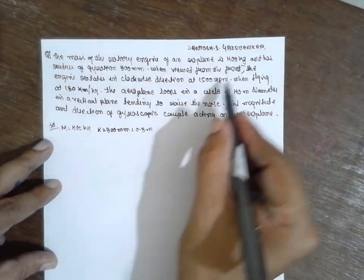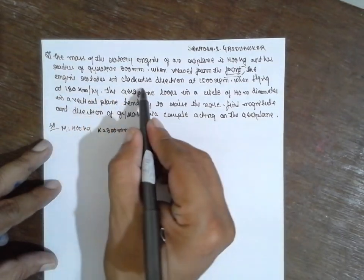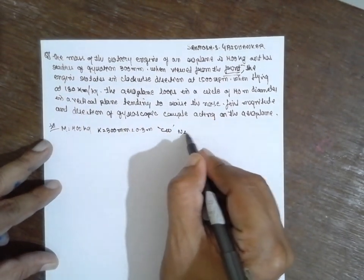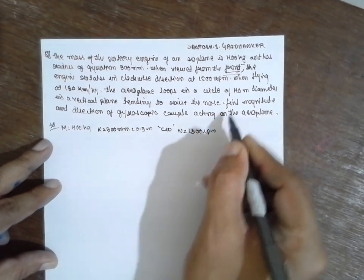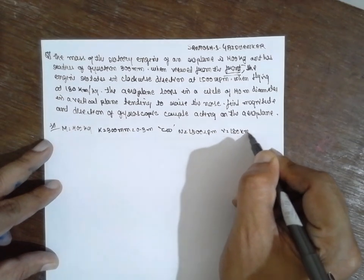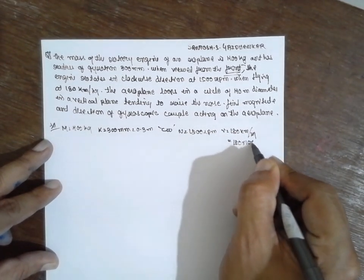We are viewing from the front here, it is very important, of engine rotating in clockwise direction. Clockwise direction, n is equal to 1500 rpm and flying at v is equal to 1800 km per hour, has to be converted into 18 into 1000 divided by 36.